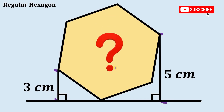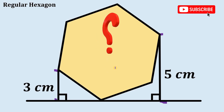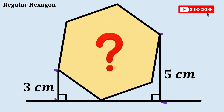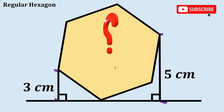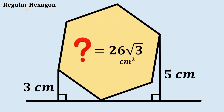The question is: what is the area of this regular hexagon? Pause the video right now and see if you can answer this question. The area of this regular hexagon is equal to 26 times the square root of 3 square centimeters.